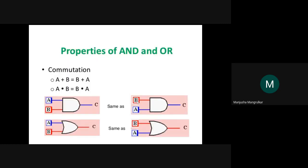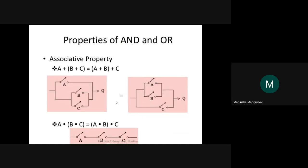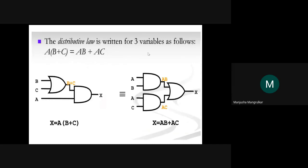Theorem 4 is the Associative Law: A OR (B OR C) equals (A OR B) OR C, and A AND (B AND C) equals (A AND B) AND C. Theorem 5 is the Distributive Law: A AND (B OR C) equals AB OR AC. Also, A OR (B AND C) equals (A OR B) AND (A OR C). These can be represented symbolically as Boolean algebraic equations with 3 inputs and 8 combinations.